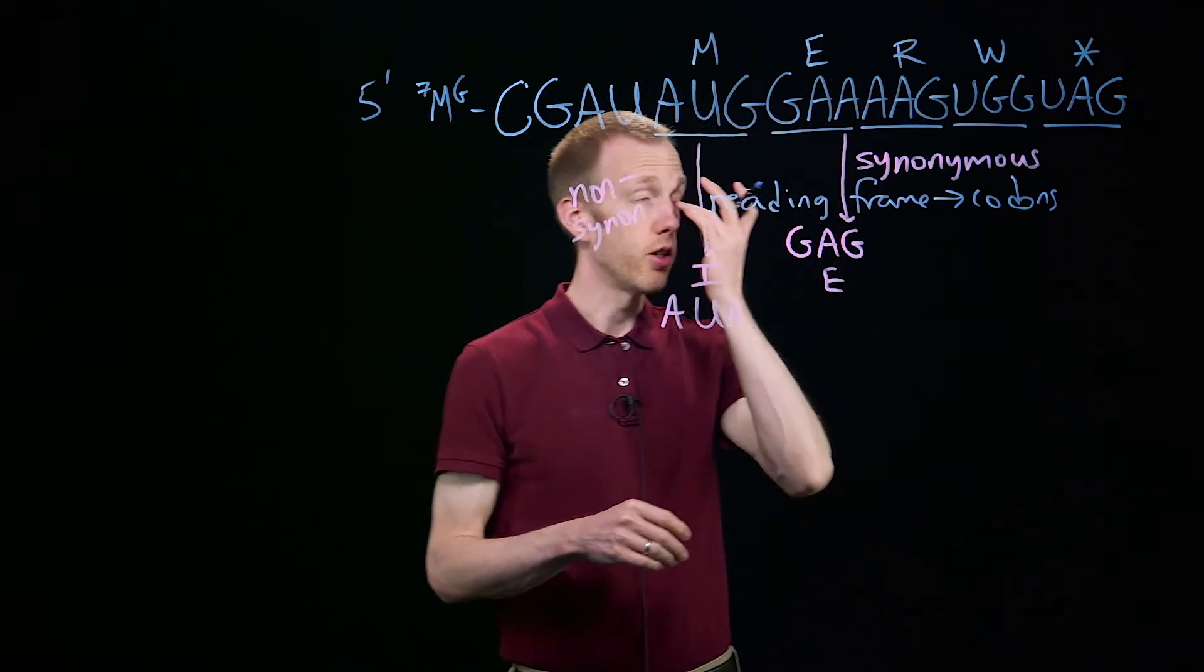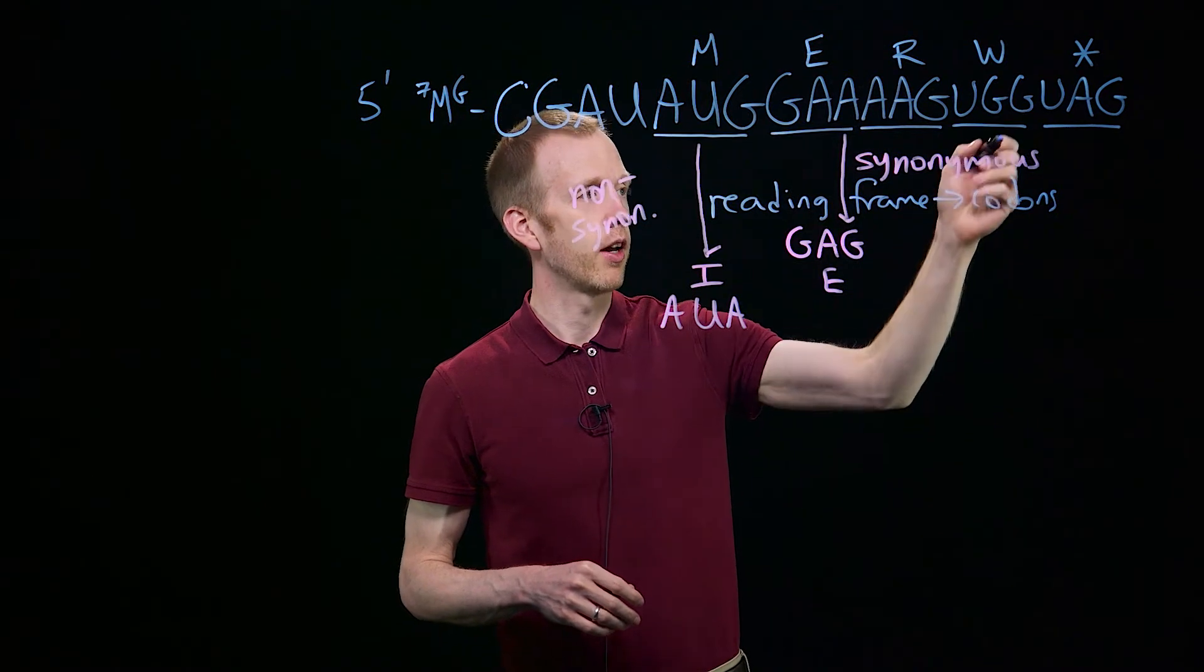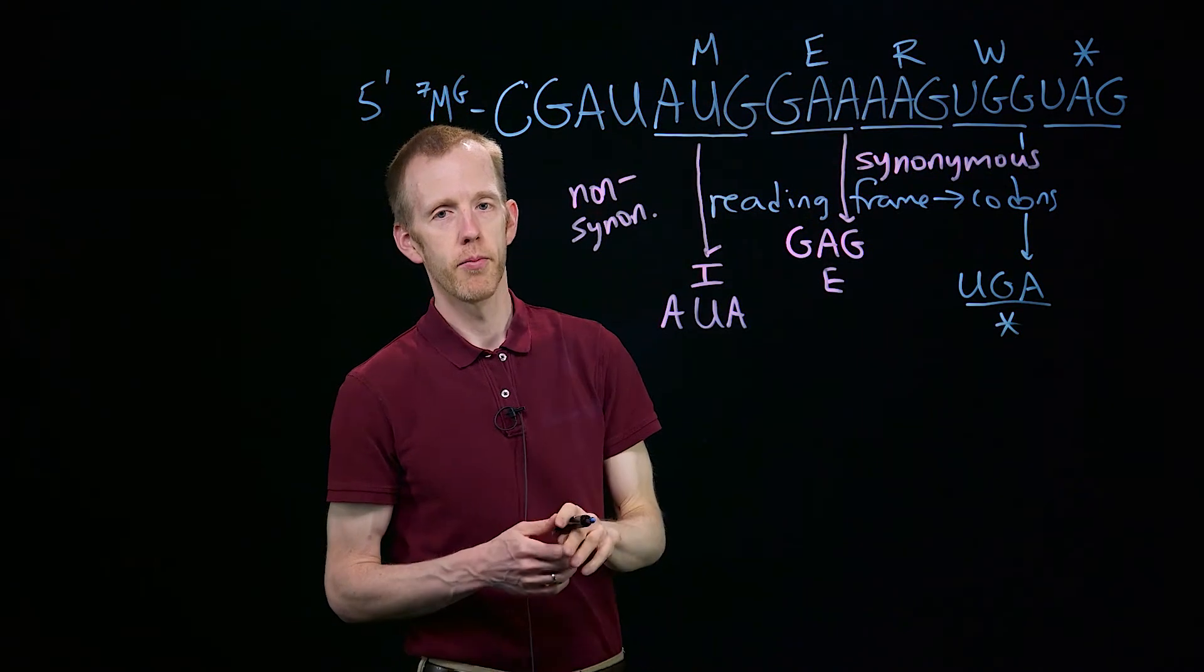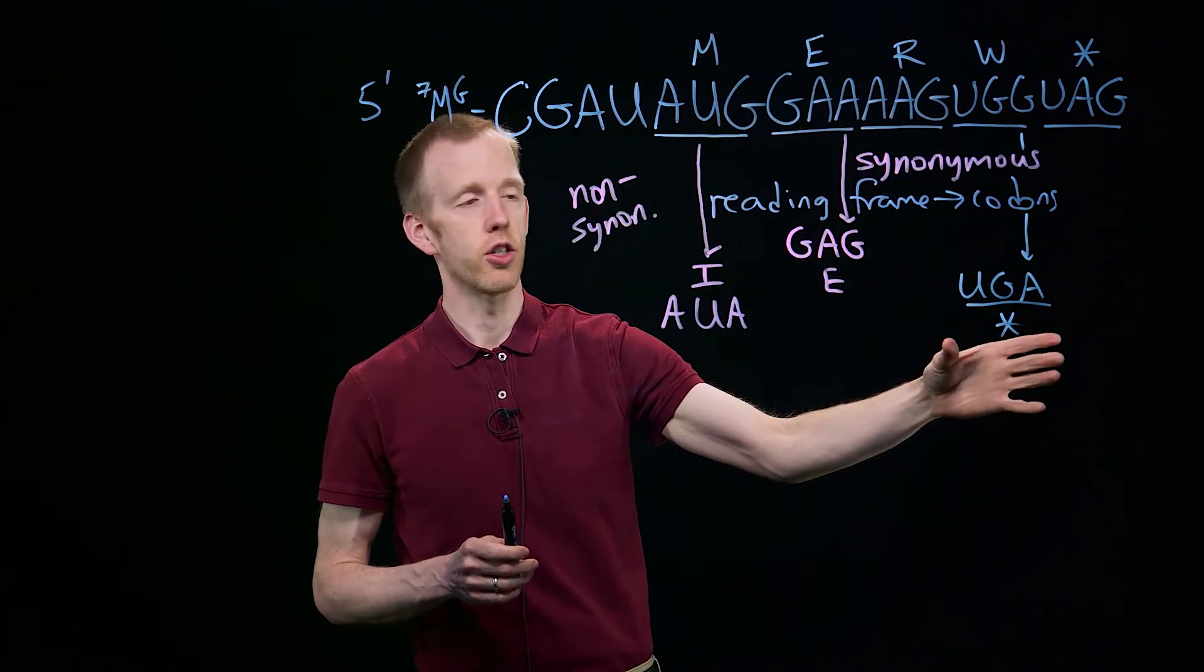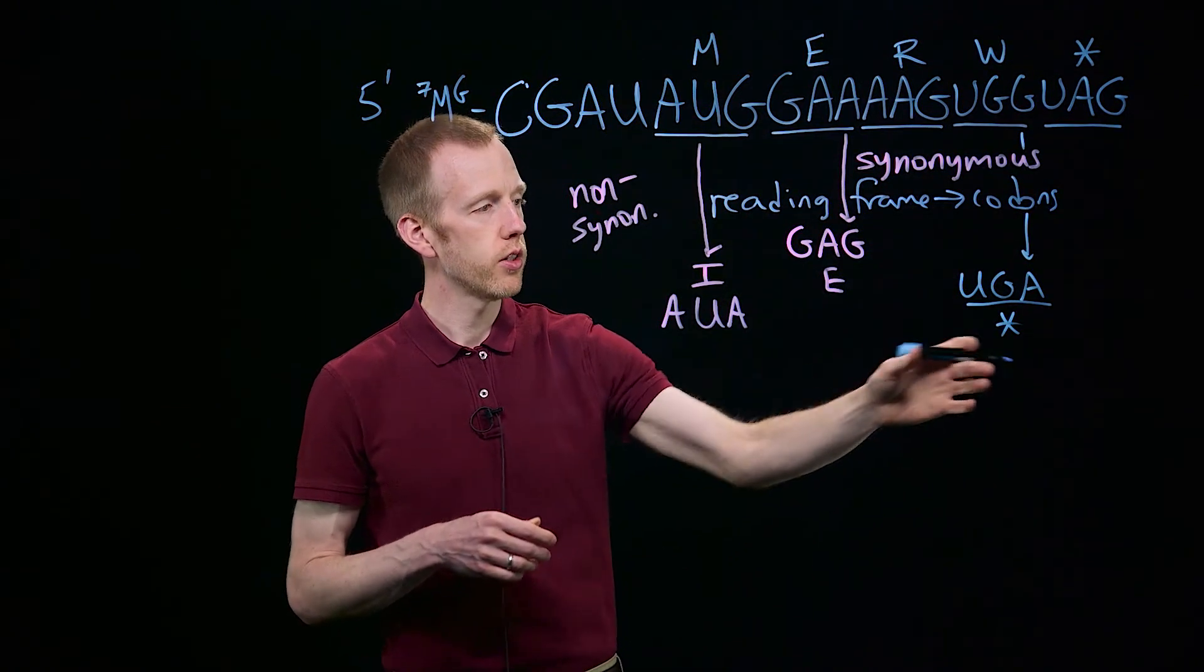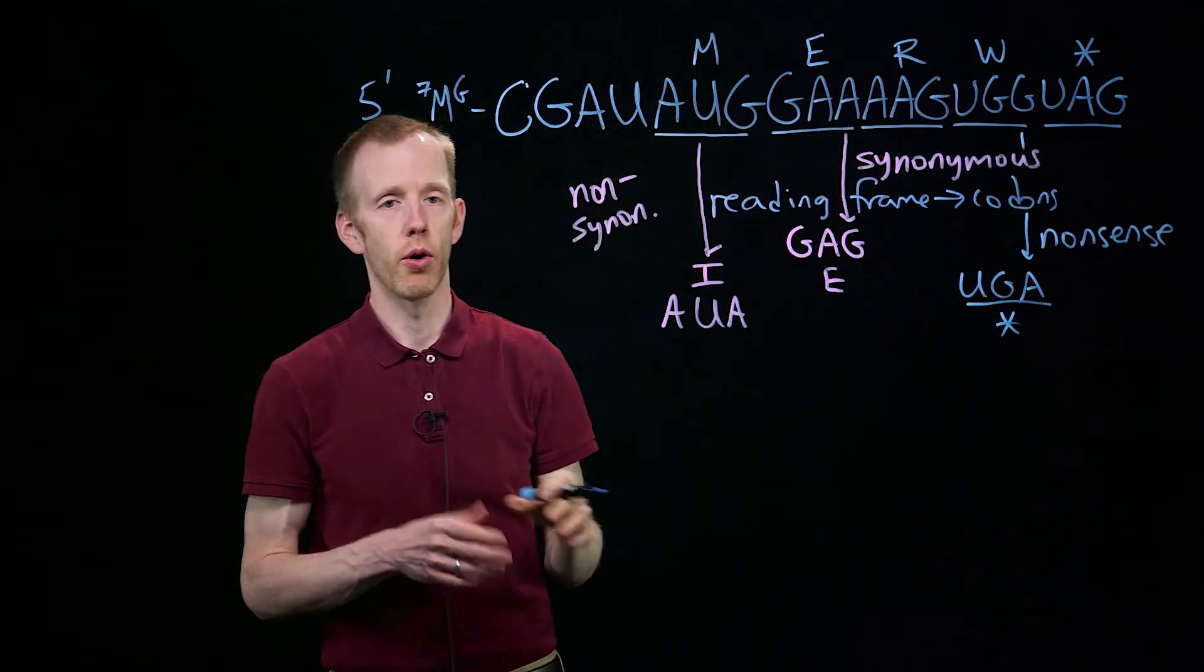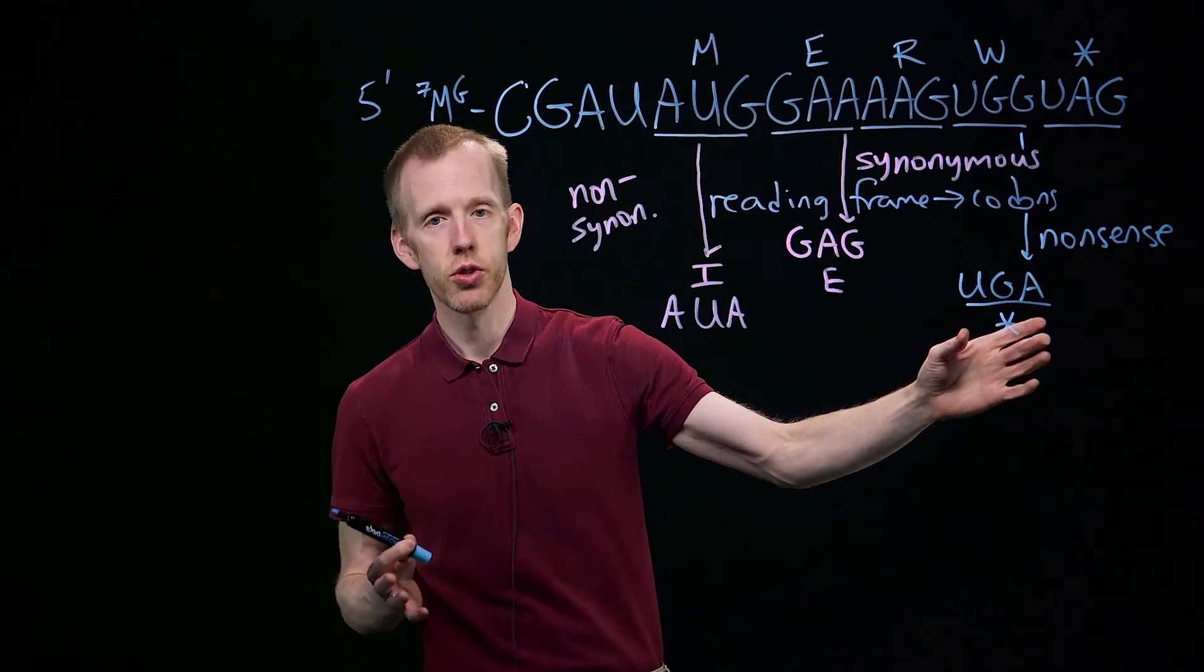We also have nonsense mutations. In this case, if the third position, this second G of the tryptophan, changed to UGA, a G to A mutation, UGA encodes a stop codon. So a ribosome would read AUG, GAA, AAG, and then UGA, and stop translation there, instead of adding this final tryptophan and stopping at the next codon. This mutation causes a truncated, slightly shorter protein, and it encodes what's called a nonsense codon, one of the three stop codons. In this case, we've made a mutation that's created a new stop codon.